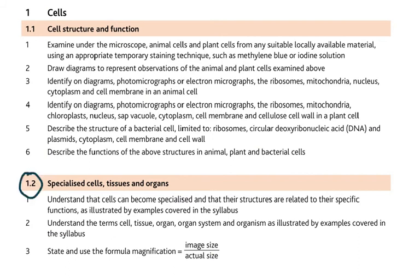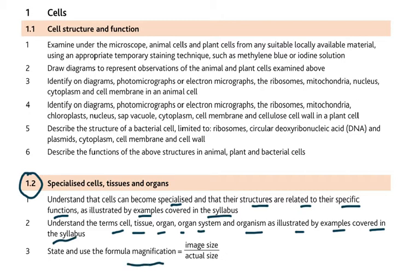Moving to section 1.2, we have three key points: first, understand that cells can become specialized and their structures are related to their specific functions. Second, understand the terms cell, tissue, organ, system, and organism as illustrated by syllabus examples. Third, state and use the formula: magnification equals image size over actual size — something everyone should be very clear on.